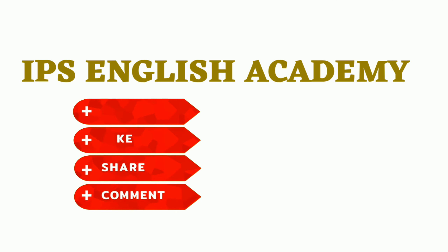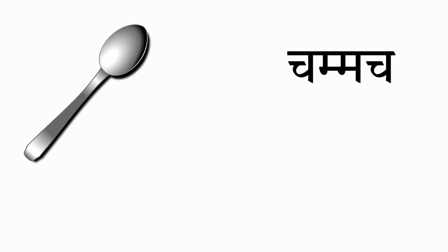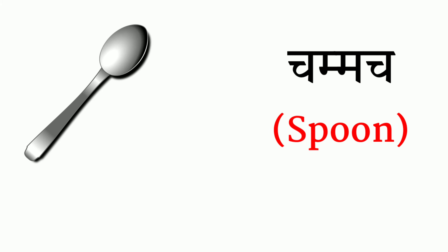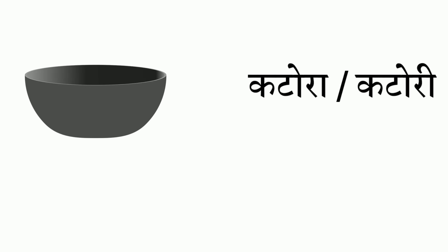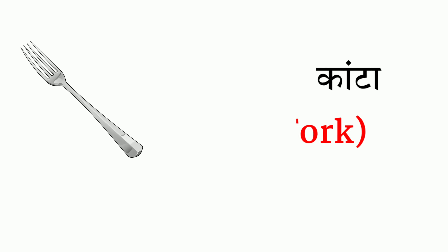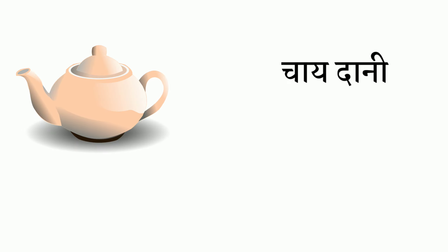The very first word we have is chamach — in English, spoon. Second we have katora or katori — in English, bowl. Third we have kata — in English, fork.